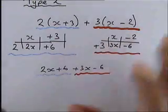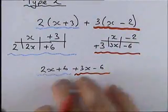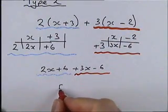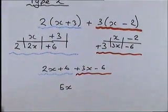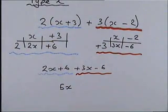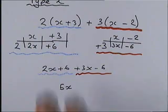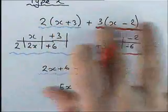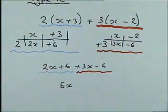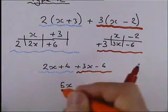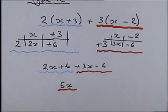Now we're doing proper algebra — no tricks. 2x and 3x make 5x, and 6 take away 6 makes nothing in this case. So the answer is simply 5x. Those two brackets multiplied by 2 and by 3 respectively, added together, give 5x.